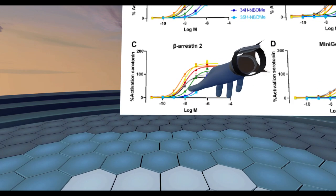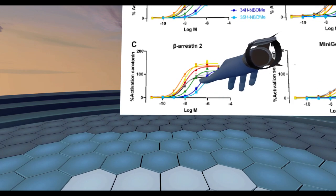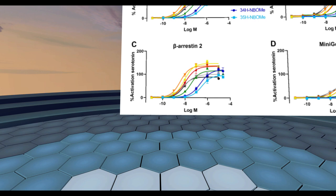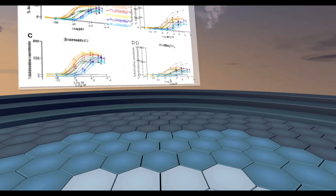But then when you take that two position methoxy and change it to a 3,4 or a 3,5, we can see there's a drastic loss in both potency and efficacy of the compound, suggesting that maybe there's something special about this two position methoxy which leads to them maintaining high potency. And if we change them to a three position we see a drastic loss in the potency and efficacy of the N-bomb compound.